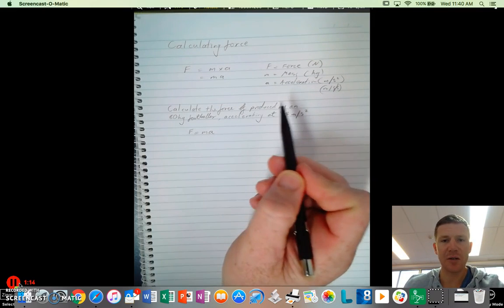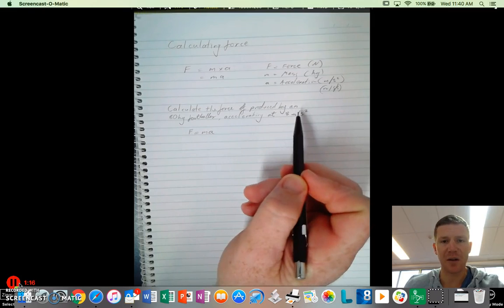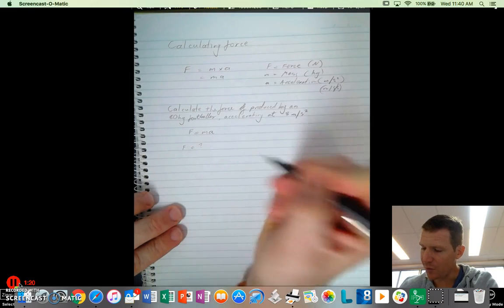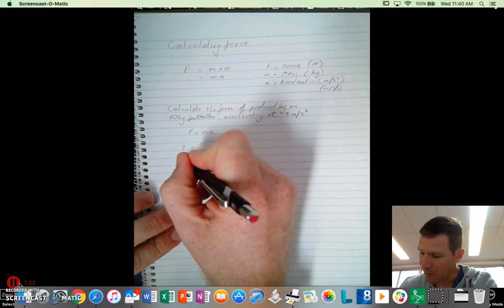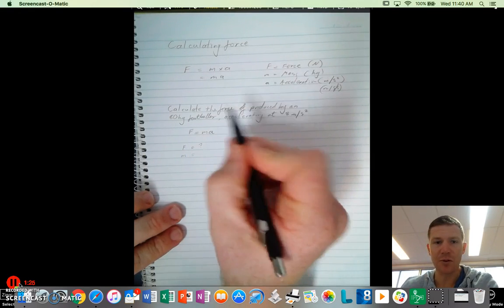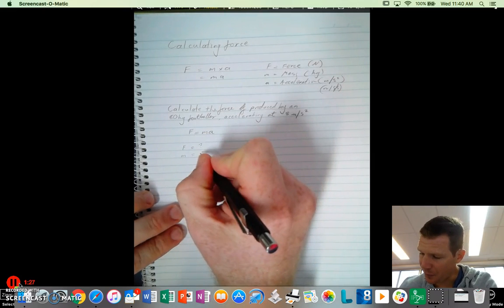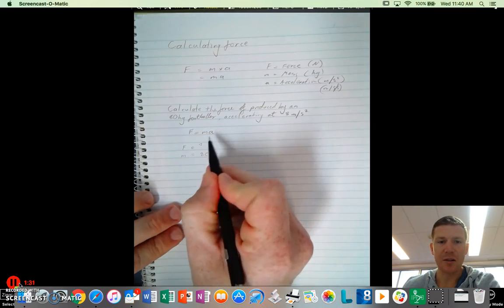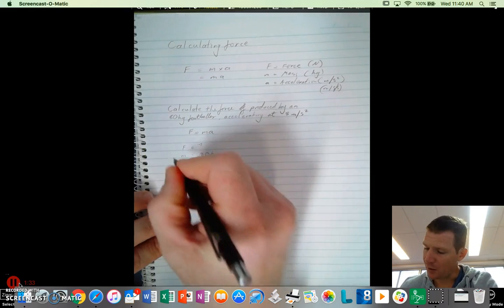Then all we need to do is identify the different variables here. So we know that force is what we're looking for, so we need to find M and A. So mass equals, okay, it's an 80 kilogram footballer, so mass is 80 kilograms, and then acceleration here, we want to get the other one. So acceleration equals 8 meters per second squared.